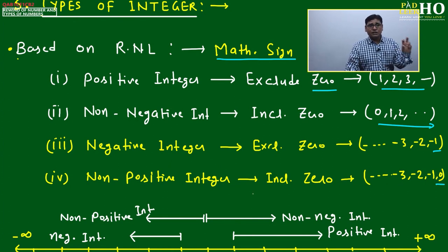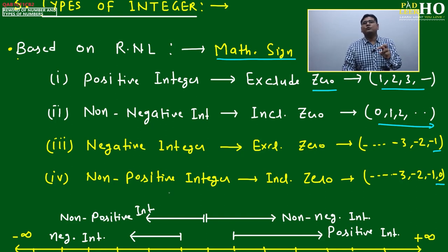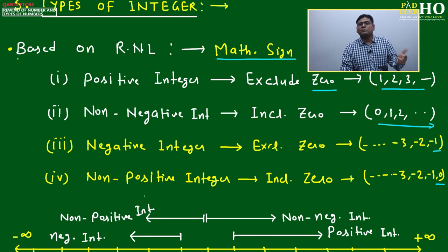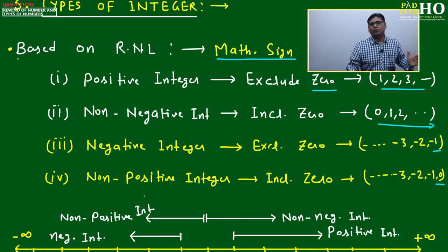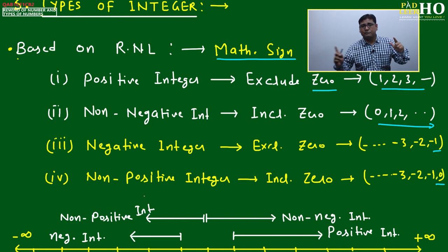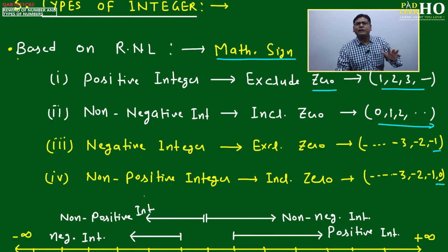Keep these four types in mind — questions will try to confuse you. Non-negative and non-positive counting will always differ by one or more. Most of the time your count of solutions may differ by plus or minus one, or even two, depending on whether the lower or upper extreme is included as a solution.